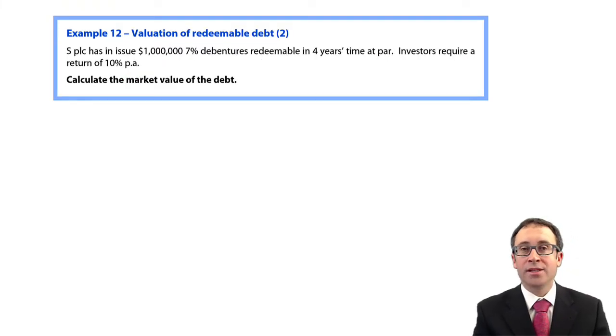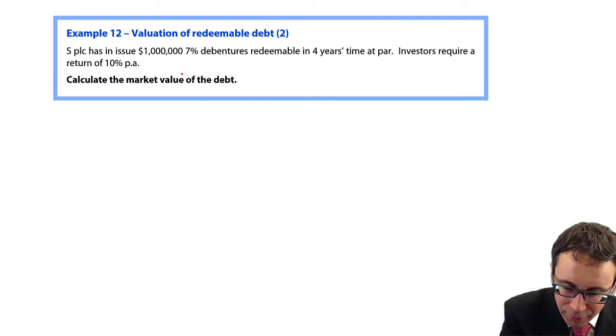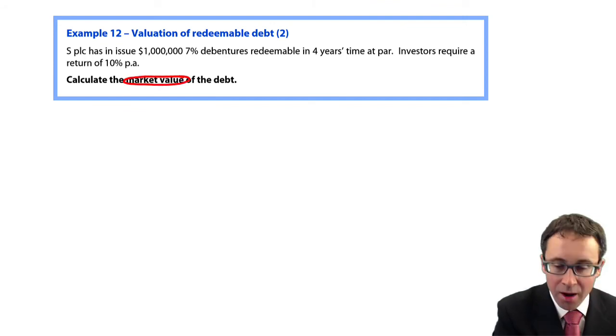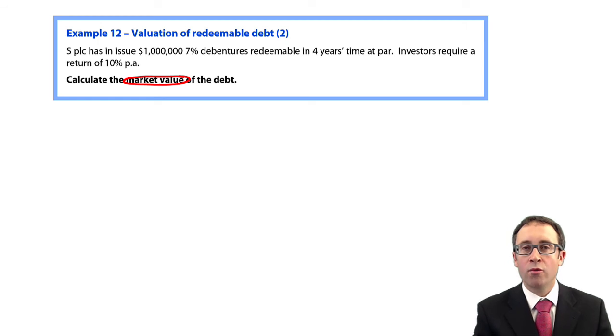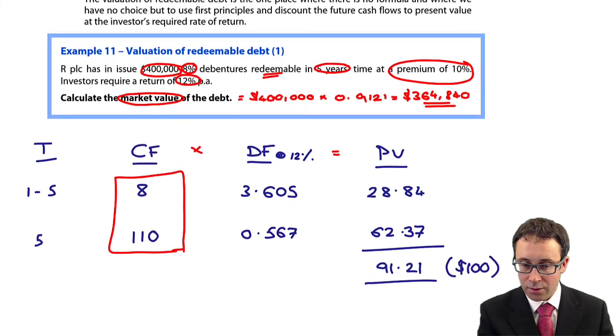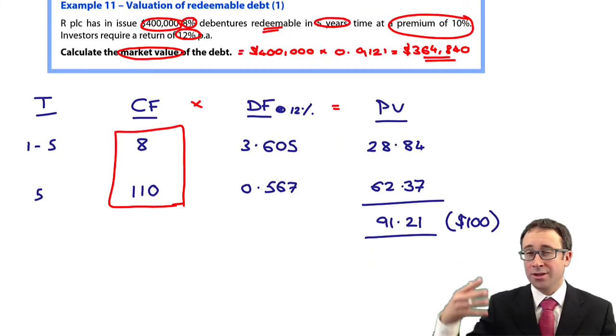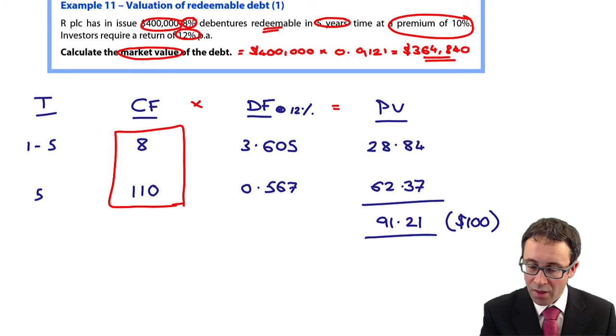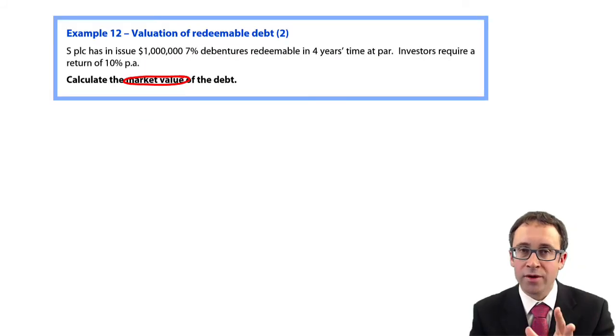You've got another example, example number 12, the value of redeemable debt number 2. Like we said before, the only way to get good at these questions is to practice them. Have a go and practice working out the market value of this particular redeemable bond. Lay it out in exactly the same way as we did on the previous example, using that table. If you can work that through, you'll be fine. Stop the video and rejoin us again in a moment.